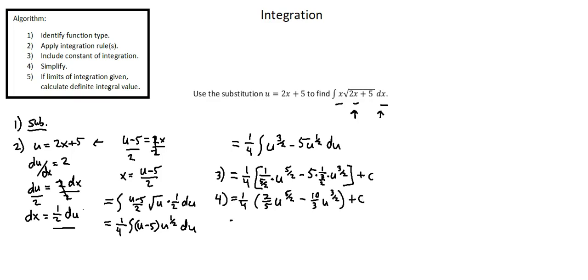Now distributing the 1 over 4: 1 over 4 times 2 over 5 is 2 over 20, or 1 over 10, times u to the power of 5 halves, minus 1 over 4 times 10 over 3 is 10 over 12, or 5 over 6, times u to the power of 3 halves, plus c.